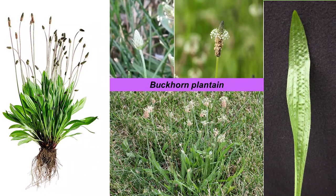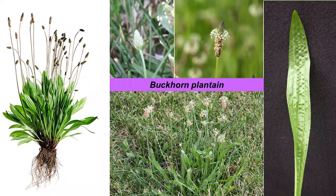Buckhorn plantain is a cool season perennial that tolerates compaction, low fertility, dry soils, and low mowing heights. Simply mowing higher can reduce populations by shading this weed. It forms a rosette with narrow leaves that have prominent parallel veins. The leaves are dark green with sharp tips and are sometimes twisted and curled. The flowers are tightly clustered at the end of a long stalk — white and delicate, opening one ring at a time from the bottom to the top. The seed head is bullet-shaped, and reproduction is by seed.